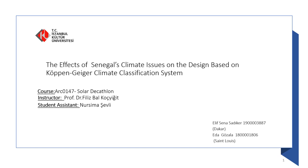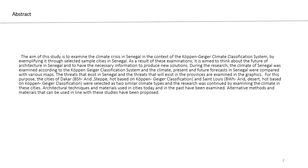Hello everyone. Today we are going to be talking about the effects of Senegal's climate issues on design based on the Köppen climate classification system. Our main goal is to study and examine the climate crisis in Senegal, exemplifying it with selected cities. We chose two cities from Senegal, both having the B climate type, and we will compare their architectural techniques, materials, and the relationship between these techniques and climate issues, and how we can find new solutions to solve these old issues.